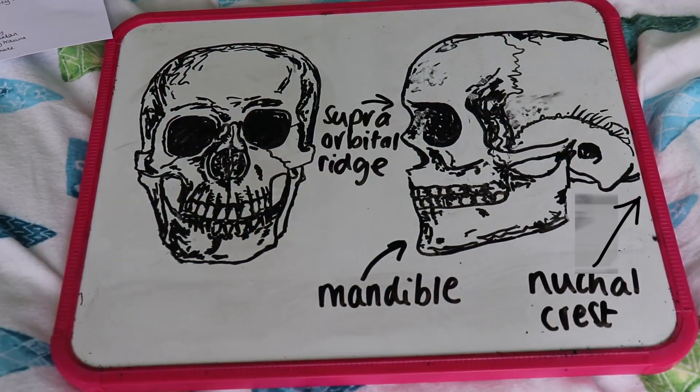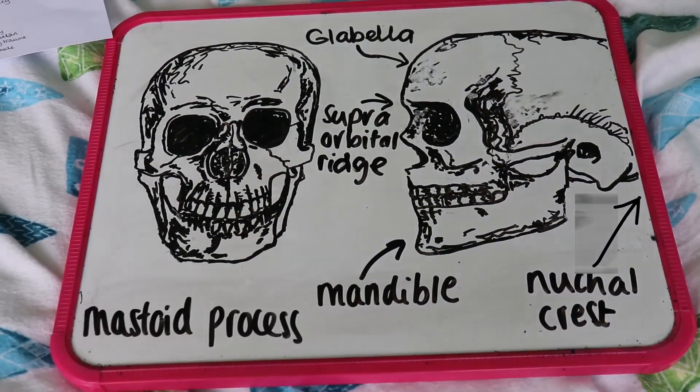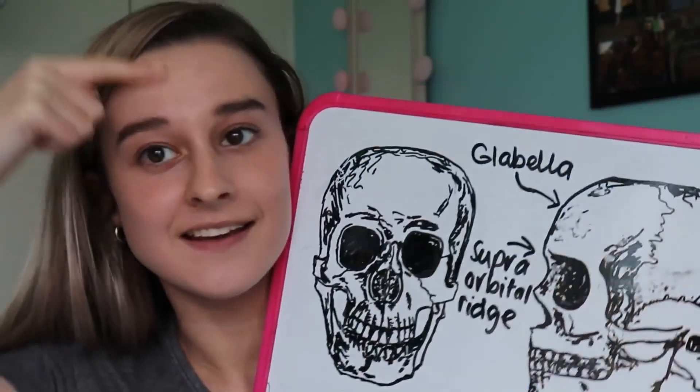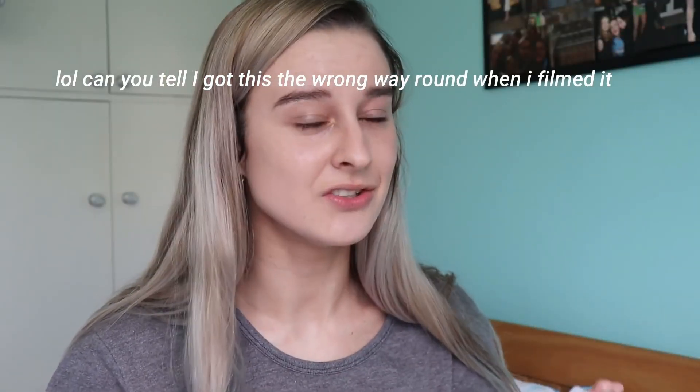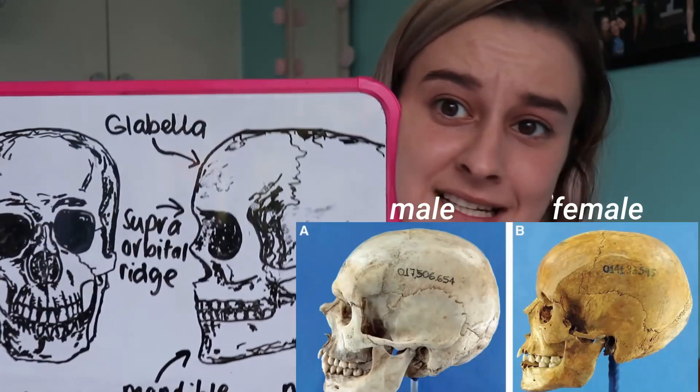When using the skull for sexing, the main things you need to look at are the mandible, the nuchal crest, the supraorbital ridge, the glabella, and the mastoid process — that little sticky-outy thing. The glabella is the part of the forehead between your eyes and the top of your head. In women the glabella is generally more vertical; in males it slopes a bit more. From my picture I would say this was a female glabella because it's almost a right angle before it turns. Not all skulls follow a pattern, which is why you need all the other methods too.